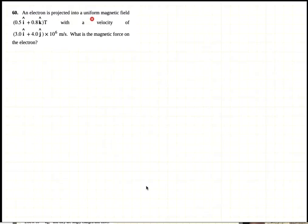Okay, so in this problem an electron is projected into a uniform magnetic field 0.5i + 0.8k Tesla with the velocity of 3i. What is the magnetic force on the electron? The magnetic force on the electron is Q V cross B.